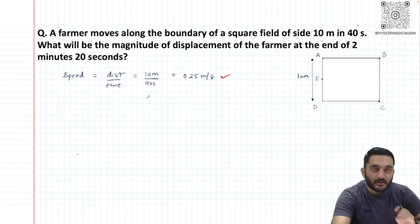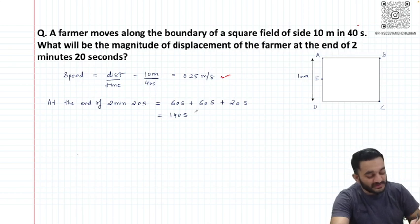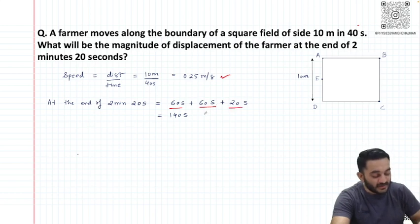Now we know it covers 0.25 meters per second. The total time is 2 minutes 20 seconds. One minute consists of 60 seconds, so 1 minute plus 1 minute plus 20 seconds gives us 140 seconds total time.